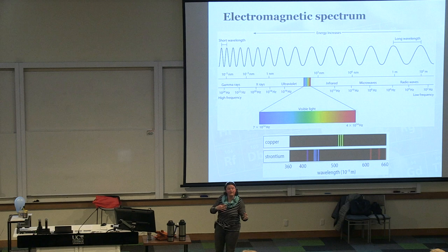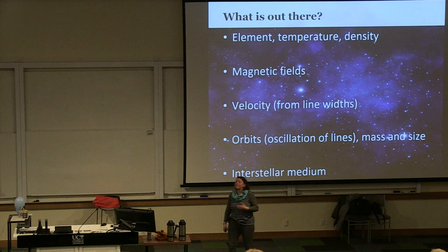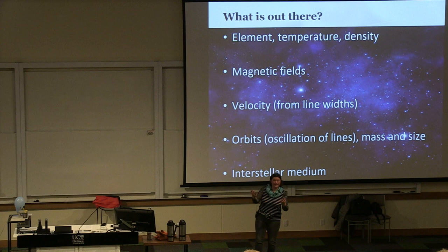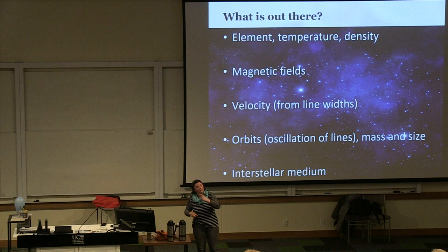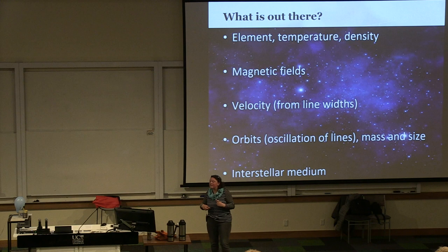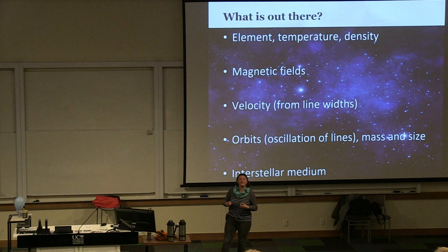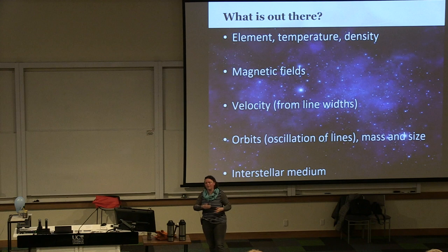We can use spectral fingerprints coming back to outer space — to try and identify what is out there. We can identify the element, the temperature it's at, its density, whether there are magnetic fields associated with it, how fast things are moving, whether something is orbiting, the mass, the size. We can discover what's out in the interstellar medium just by looking at the light that comes to us and identifying the different elements from those spectral lines. There's an awful lot of information we can get just from our elements.